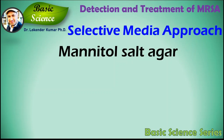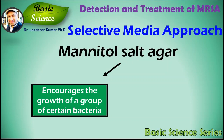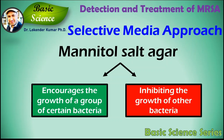Further, the sample will be plated on selective media for Staphylococcus aureus. Mannitol salt agar, or MSA, is a commonly used selective as well as differential growth medium in microbiology for the growth of Staphylococcus aureus. It encourages the growth of certain bacteria while inhibiting the growth of others.